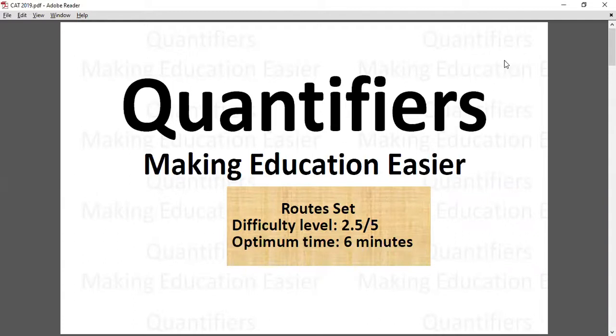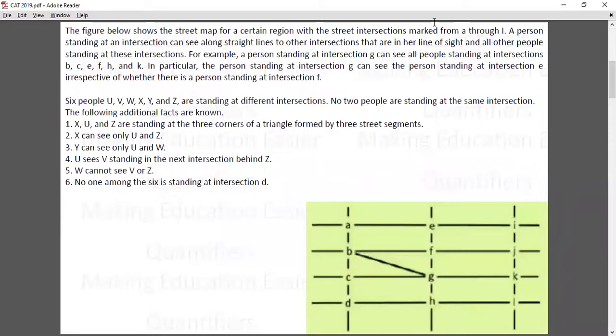It's a moderate level problem. So this is the set that is in front of us. What does the set say? The figure below shows the street map of a certain region. This is the street map with the street intersections marked from A through I. A person standing at an intersection can see along the straight lines to other intersections.